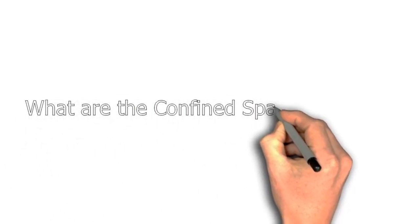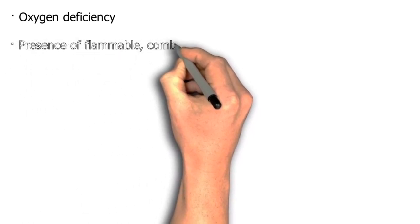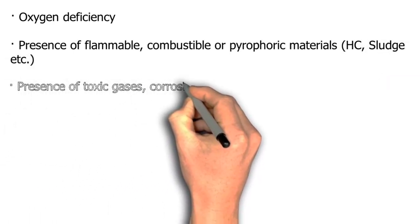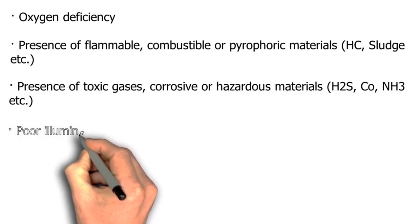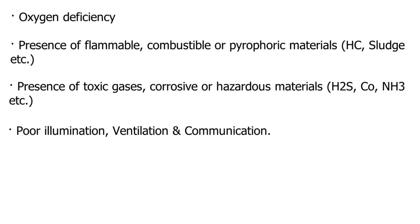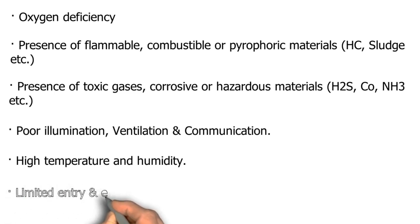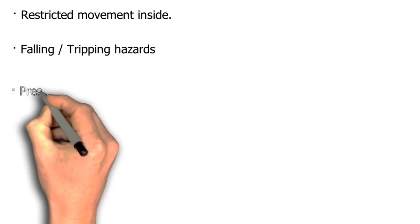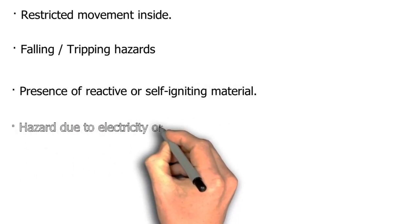What are the confined space hazards? Oxygen deficiency; presence of flammable, combustible or pyrophoric materials such as HC sludge; presence of toxic gases, corrosive or hazardous materials such as H2S, CO, NH3; poor illumination, ventilation and communication; high temperature and humidity; limited entry and exit with restricted access; restricted movement inside; falling and tripping hazards; presence of reactive or self-igniting material; hazard due to electricity or moving machinery.